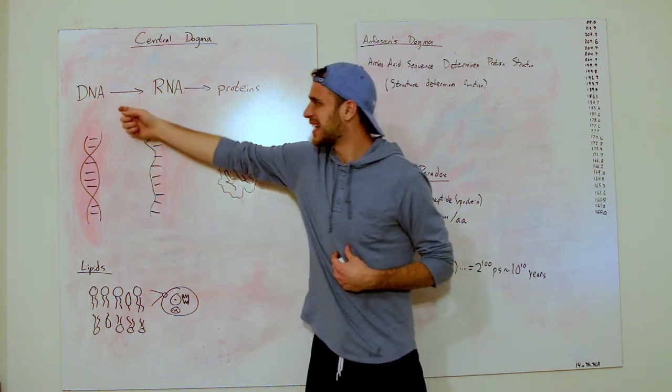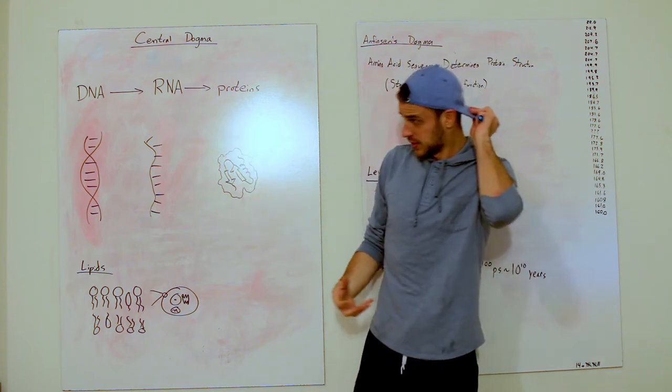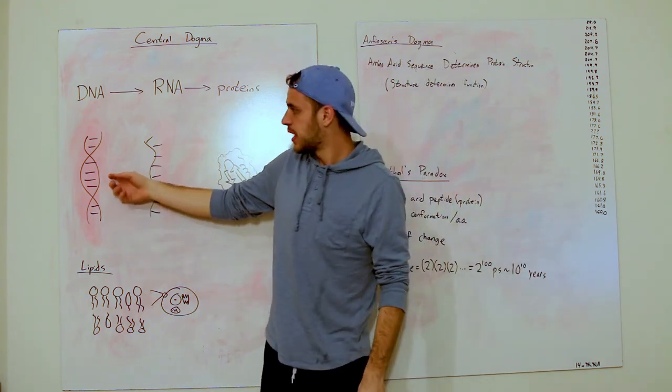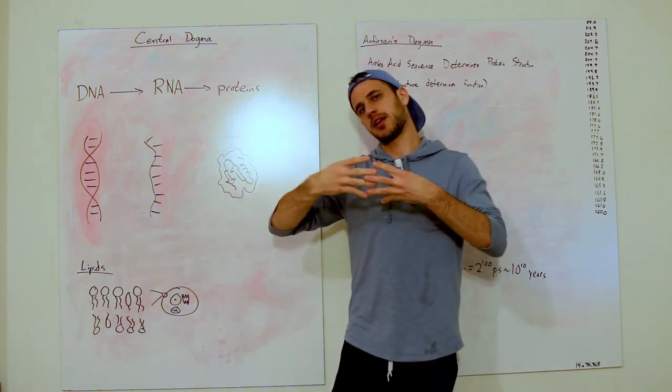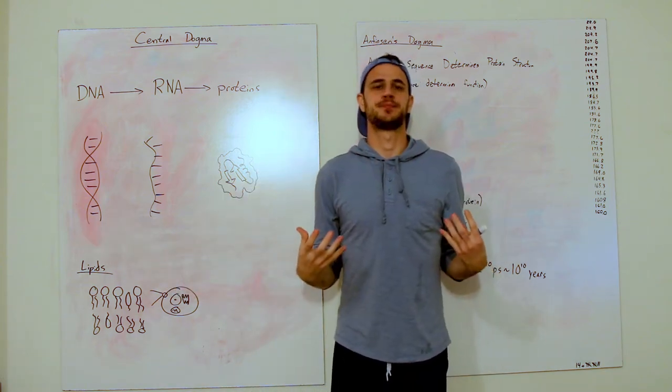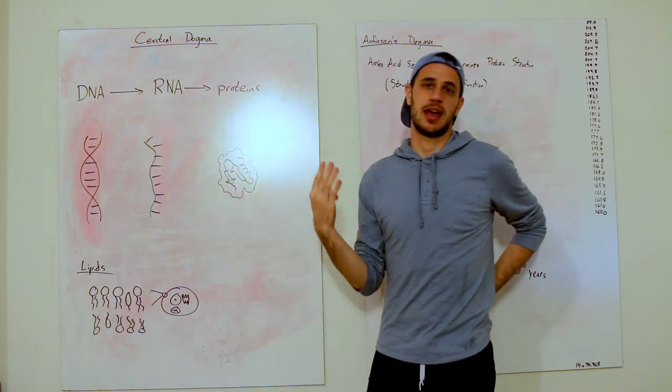So central dogma states that DNA goes to RNA goes to proteins. We all know this a million times, but DNA is this double helix guy that has this phosphate backbone with the nucleotides that bond with each other. DNA is made up of the four bases: A, C, T, and G.